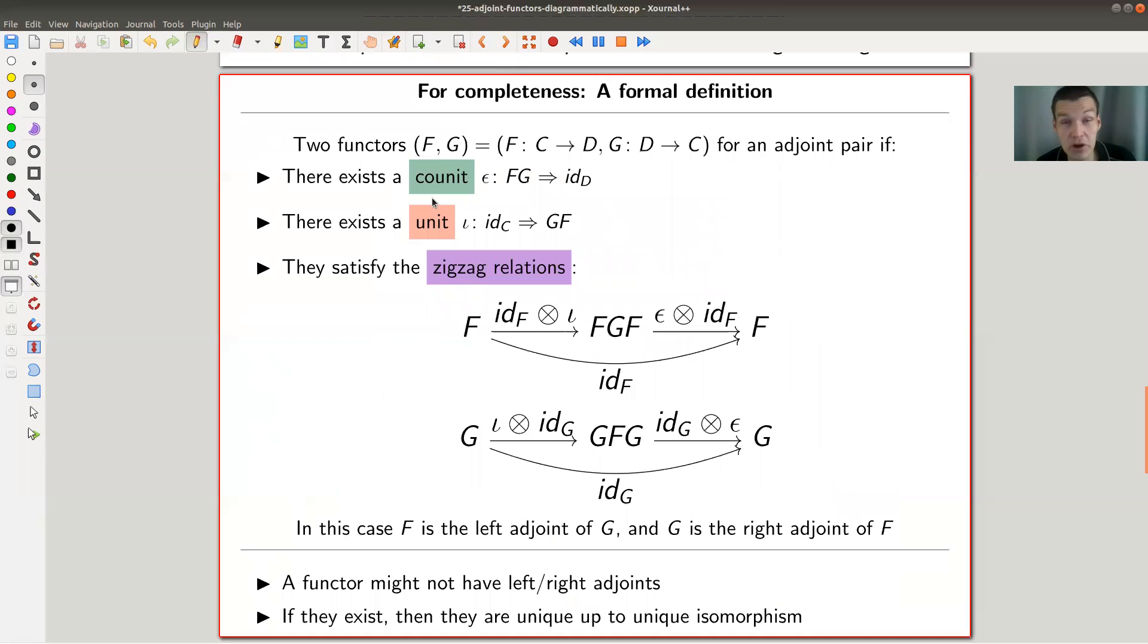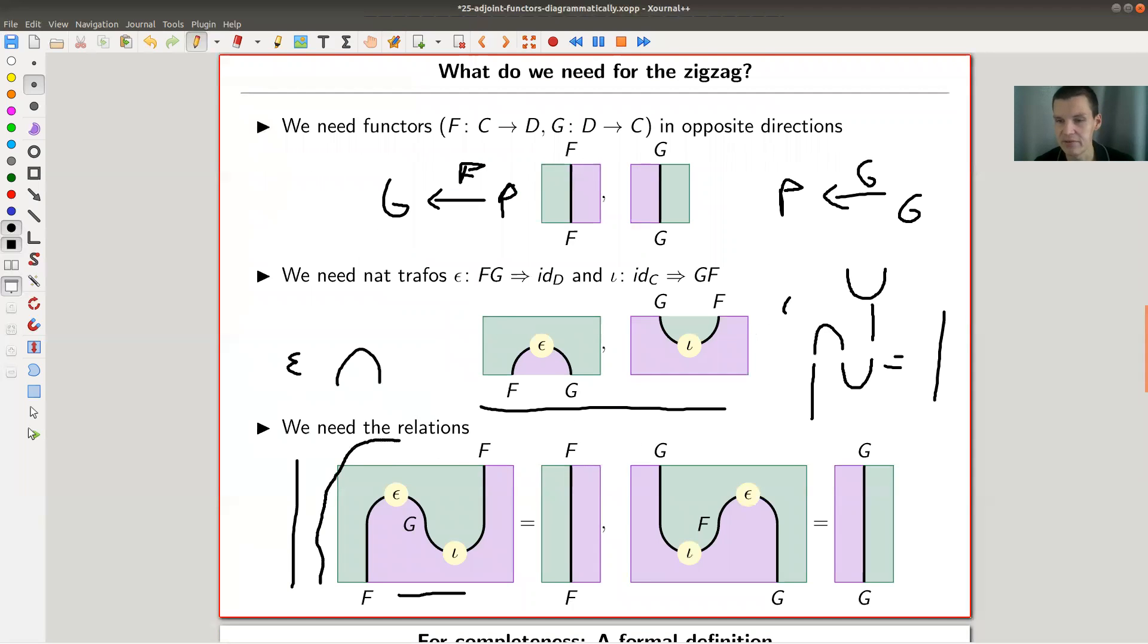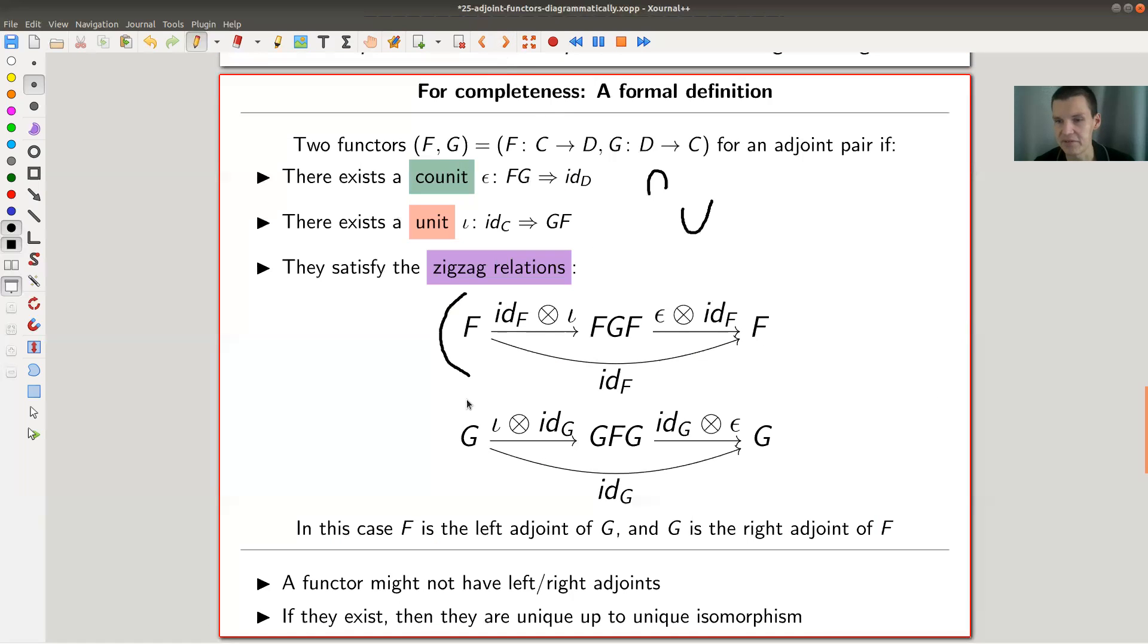We just have rediscovered an alternative definition of an adjoint pair. Two functors form an adjoint pair, F and G (F is the left adjoint, G is the right adjoint), if there exists an epsilon (the cap diagram) and an iota (the cap diagram) - they're called counit and unit - such that they satisfy the only reasonable relation, the zigzag relations. Identity and iota, epsilon and identity, but it's really just this picture here.